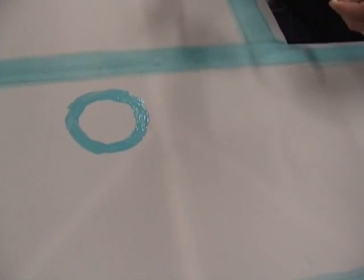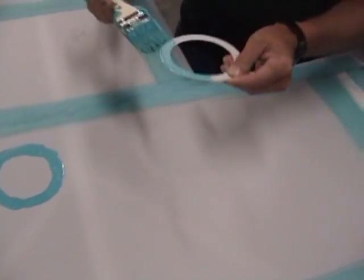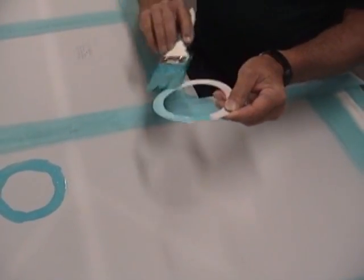And then we're going to go ahead and brush some glue on the back side, or the flat side, of the ring.